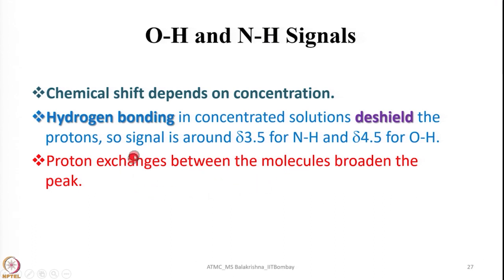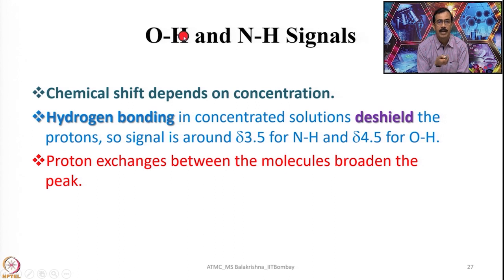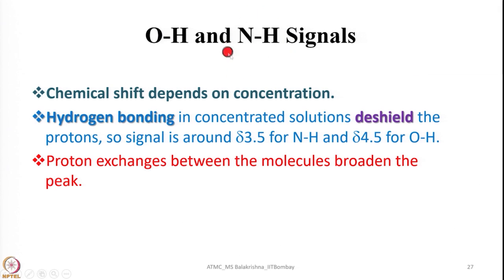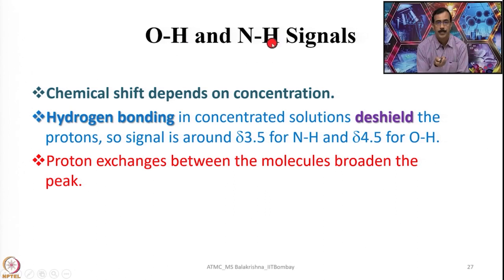Proton exchange between molecules broadens the OH or NH peak. These protons are acidic and readily exchange. If you record NMR in CDCl₃, then add D₂O and leave for 24 hours, all OH becomes OD. The signal due to OH disappears, confirming the presence of an OH group. The same applies to NH — record a freshly prepared sample, identify the NH signal, leave for 24 hours, and all NH becomes ND. You can also confirm this by IR spectroscopy by observing the O–D stretching frequency.